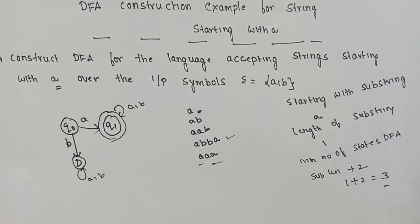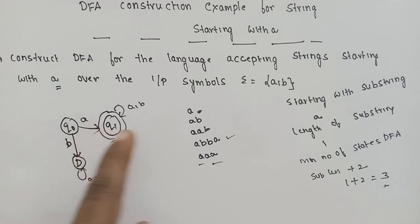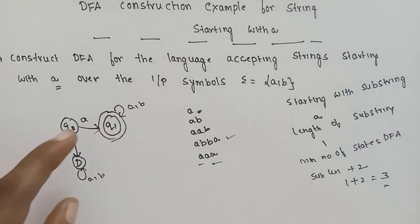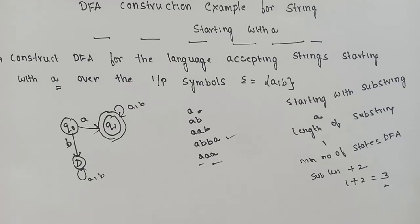For the DFA construction for strings starting with B, the same structure applies. From Q0 on B we go to Q1 which becomes the final state, and from Q0 on A we go to the dummy state. The remaining transitions stay the same.